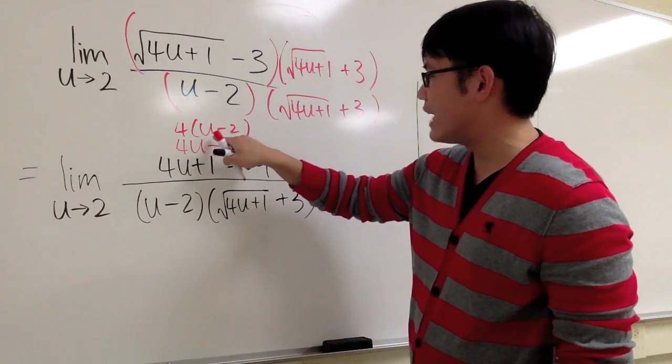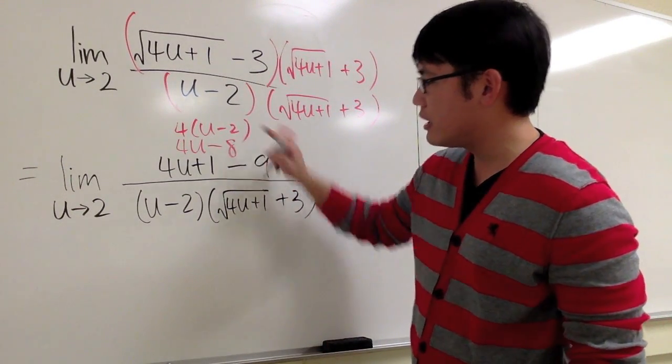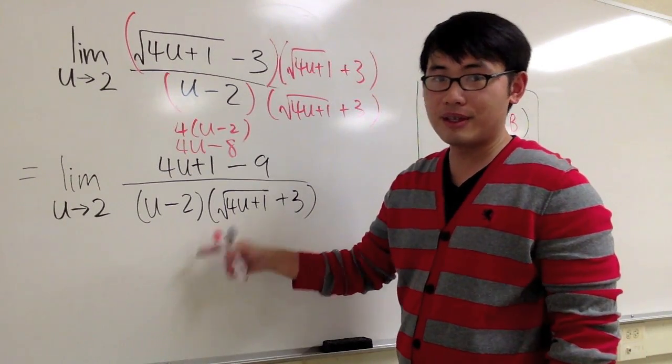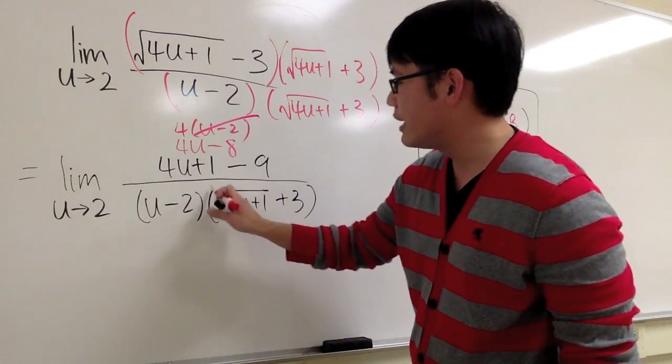And guess what? I see I have u minus 2 on the top, and we also have u minus 2 on the bottom. Of course, I can cancel this out.